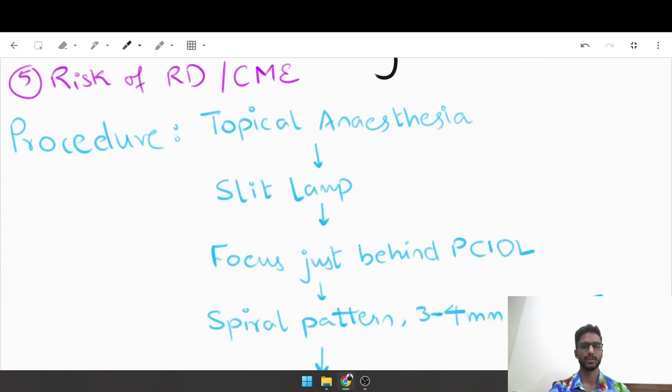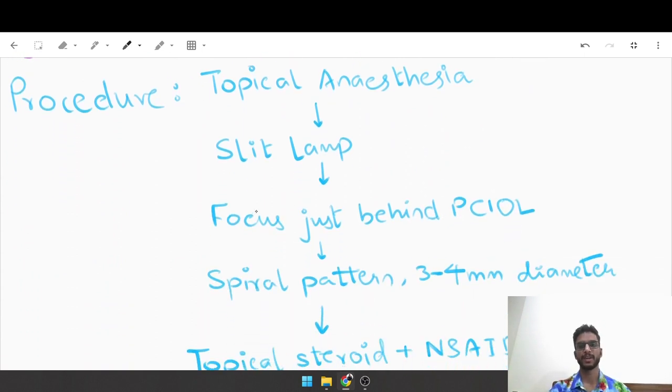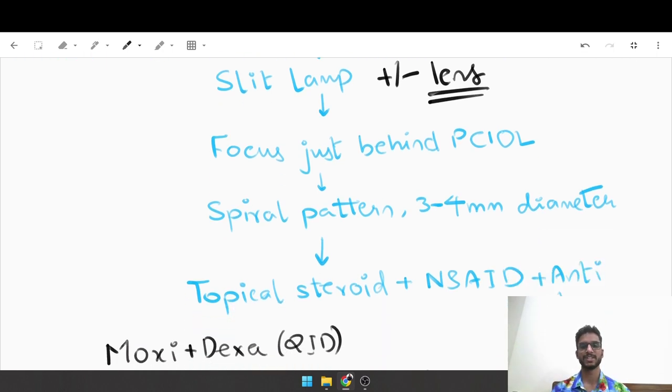How do you do it? You firstly anesthetize the patient using topical anesthesia - you use proparacaine eye drops. Always perform capsulotomy on a slit lamp. A slit lamp is an instrument that helps stabilize the patient and stabilize the surgeon. You can or cannot use a plus focusing lens - it really depends on the surgeon's preference. When you begin, it is best not to use a lens because there are that many fewer moving parts. You focus just behind the PCIOL.